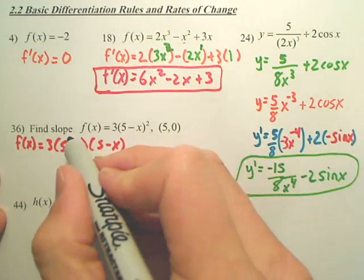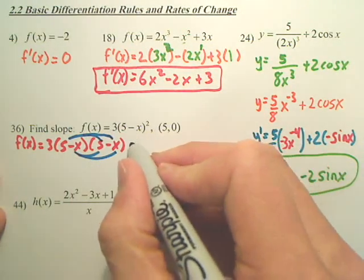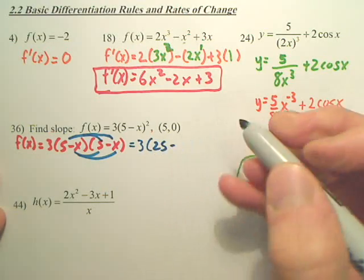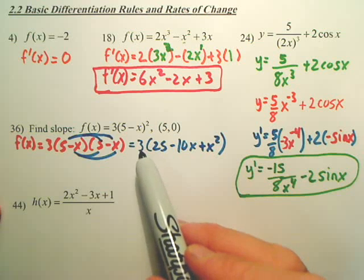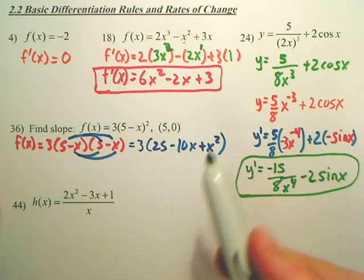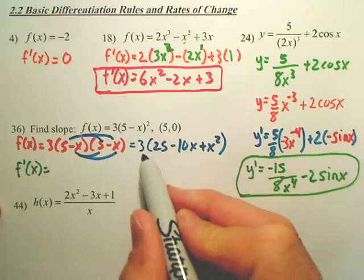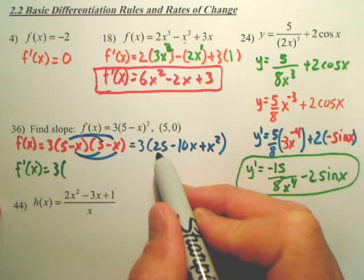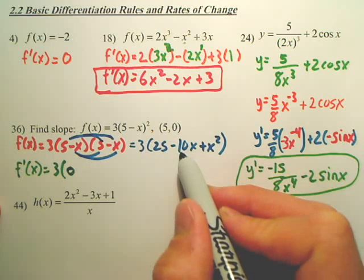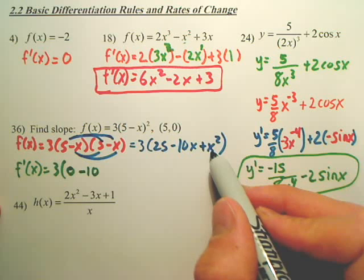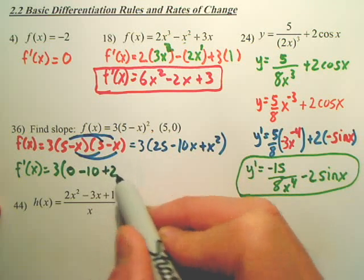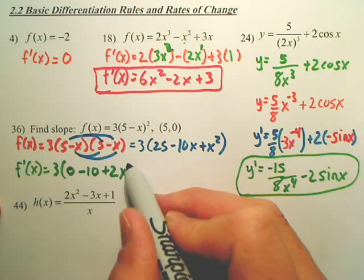After foiling, we get 3 times (25 minus 10x plus x²) out front. We can leave the 3 as a constant factor. Deriving: the derivative of 25 is 0, the derivative of negative 10x is negative 10, and the derivative of x² brings the 2 out front giving 2x.